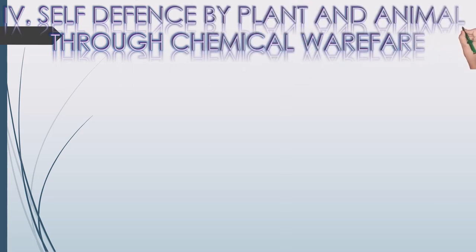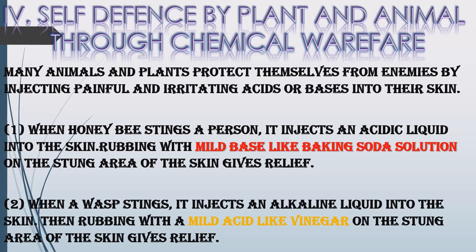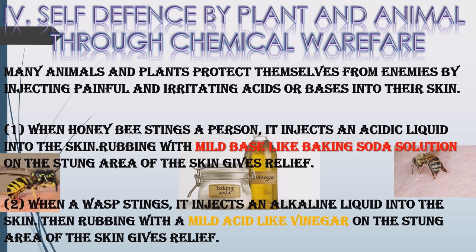Self-defense by plants and animals through chemical warfare. Many animals and plants protect themselves from enemies by injecting painful and irritating acid or base into the skin. When honey bees sting a person, they inject an acidic liquid into the skin. Rubbing with a mild base like baking soda solution on the stung area gives relief. When a wasp stings, it injects an alkaline liquid into the skin. Then rubbing with a mild acid like vinegar on the stung area gives relief.